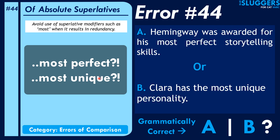Similarly, 'unique' is unique — there's nothing like it. So something can't be less unique or more unique. This reminds me of a line in Animal Farm by George Orwell, where one of the lines is that all animals are equal but some are more equal than the others. There's nothing like 'more equal than the others.' So 'most unique' doesn't make sense, and 'most perfect' doesn't make sense.